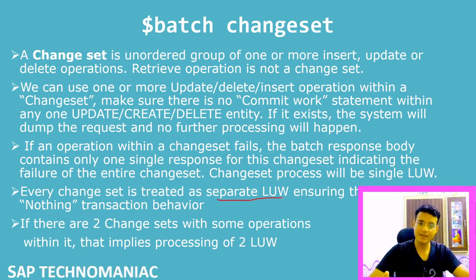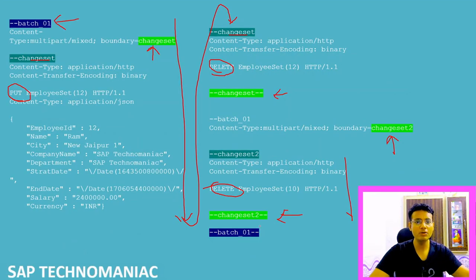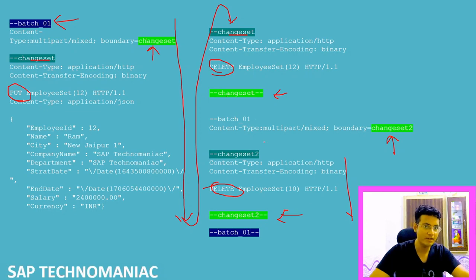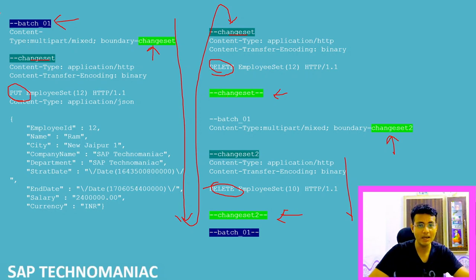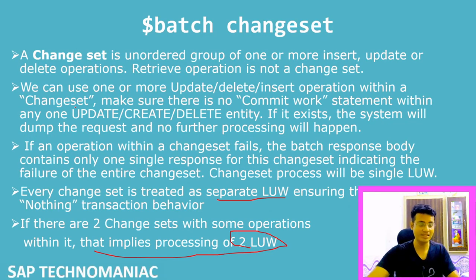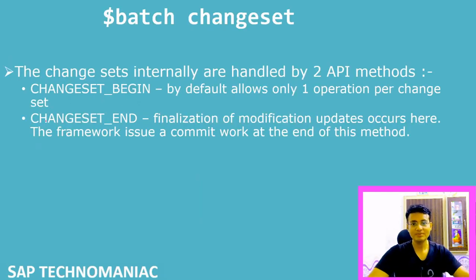Every change set is treated as a separate SAP LUW, ensuring all-or-nothing transaction behavior. If there are two change sets with operations inside them, that implies two LUWs. In this payload example you can see change set one starting and ending, then change set two with a different name starting and ending. This is the entire payload with two change sets — two operations in one change set, one operation in the other. You can also include read operations along with change sets in a $batch.